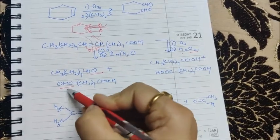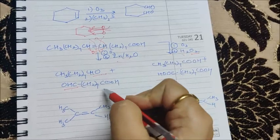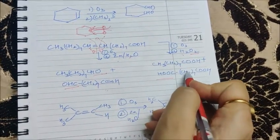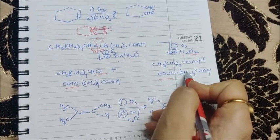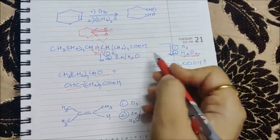And if I will be doing oxidative ozonolysis, what I will be getting is this CHO will be oxidizing to acid and this CHO will also be oxidizing to acid. So after forming reductive ozonolysis product, you can directly form oxidative ozonolysis product also with the help of it.